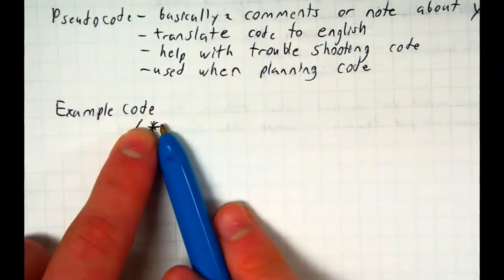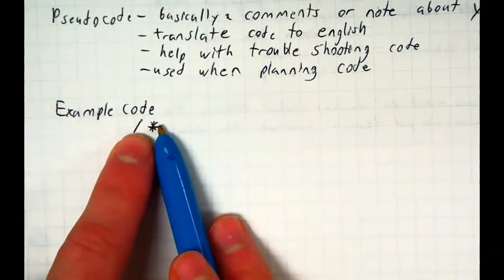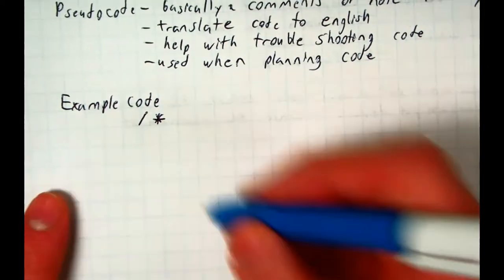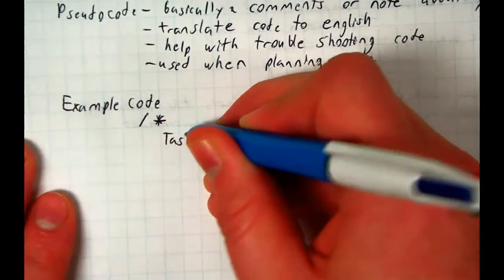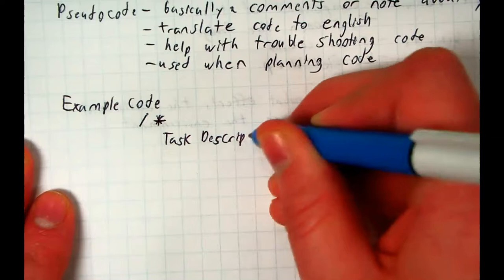So if you have this dash star, everything after it, every line after that symbol will be turned off. And so the reason why we do that is we can have our task description. And you'll see this in your template in Robot C. Task description.